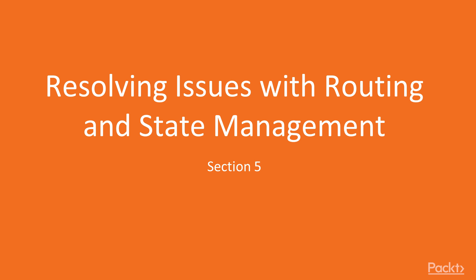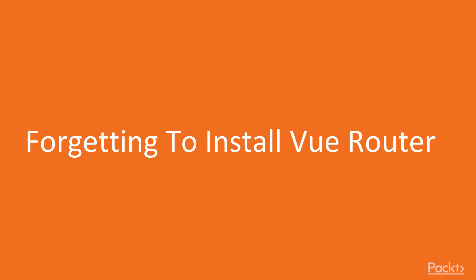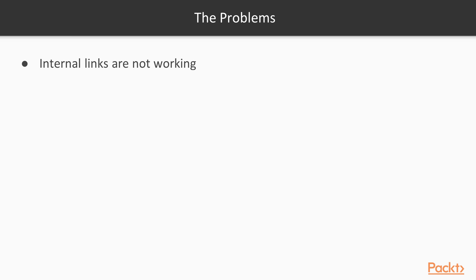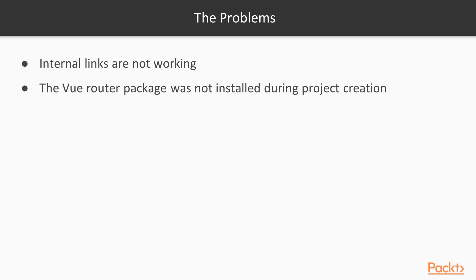Resolving Routing Issues and State Management, Section 5: Forgetting to install Vue Router. This video is about installing the full-featured Vue Router package into your existing Vue.js application. As you work on your application, you might run into the following situations, especially during the middle of development. One major problem you might encounter is that suddenly all the internal links just don't work. The problem will not be in your code, but maybe the router package is corrupted or is not properly installed. Or maybe you just realized that you now needed to use routing because you forgot to select the router package when you first created the application.